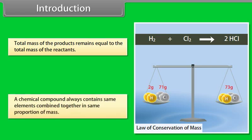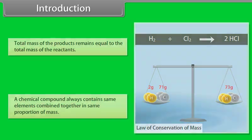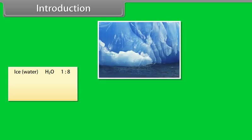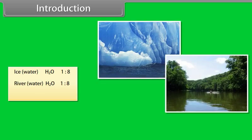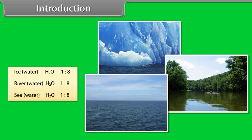A chemical compound always contains the same elements combined together in the same proportion of mass. For example, water (H₂O) always has a hydrogen-to-oxygen mass ratio of 1:8, whether it is from ice, a river, or any other source.